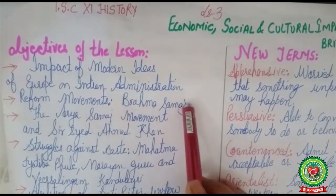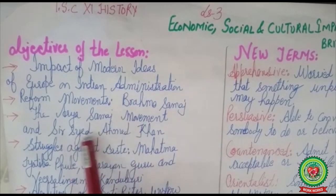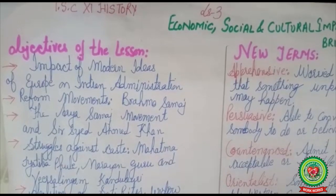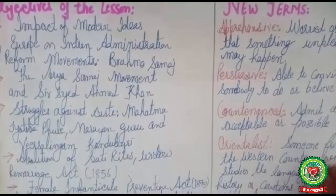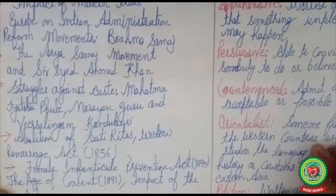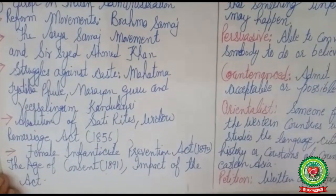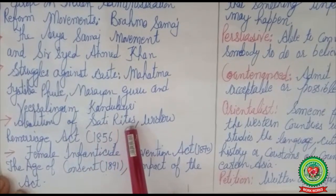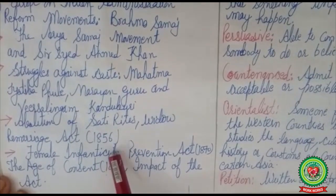We had already discussed Brahmo Samaj and the movement led by Sayyid Ahmed Khan. In the last session, we discussed the struggle against caste, covering the contributions of Mahatma Jyotiba Phule, Narayan Guru, and Veerasalingam Kandukuri. In this session, we are going to discuss the abolition of sati and the Widow Remarriage Act of 1856.